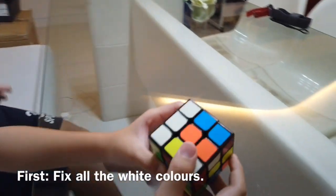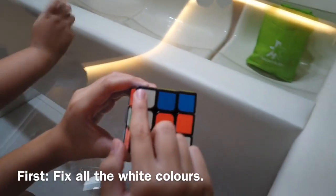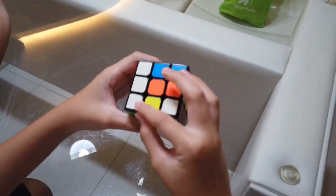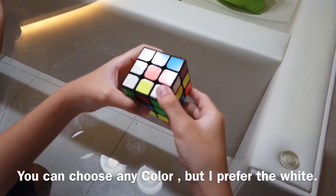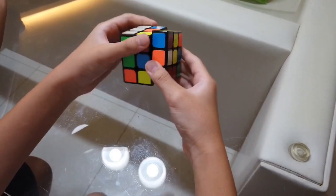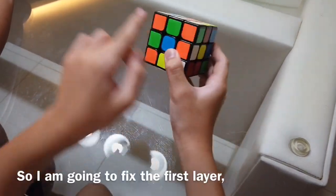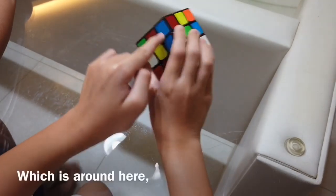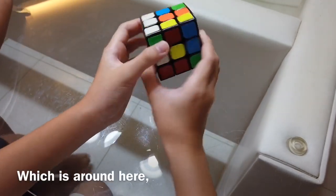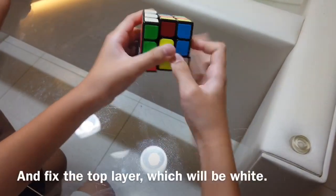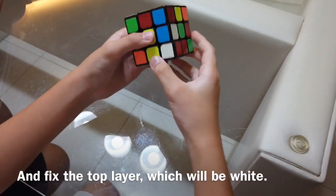First thing to do, I need to fix all the white colors. You can pick any color you want, but I prefer to pick the white color. So I'm just going to fix the first layer, which is here, around here. I'm just going to fix the white layer, the top, which is white.